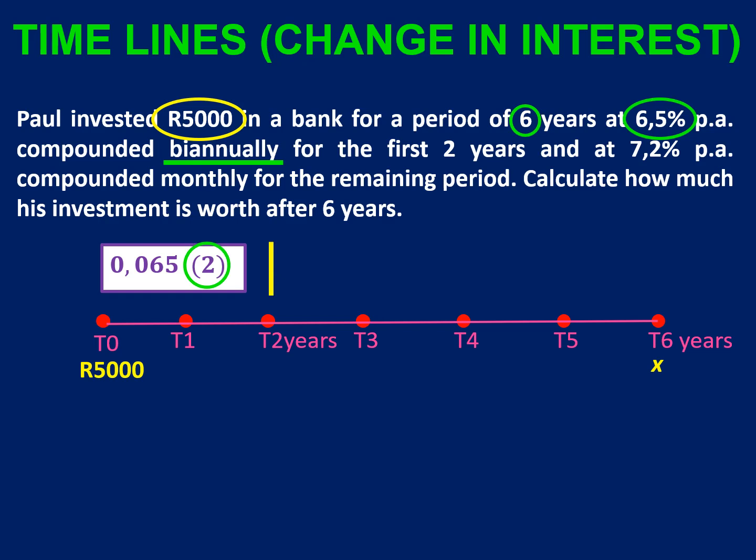After two years the interest rate then changes to 7.2%. So remember divide that by 100 to get 0.072, and for this interest rate we have a monthly interest rate. So we are going to divide the interest by twelve and multiply the years by twelve.